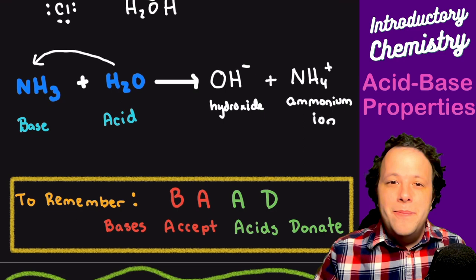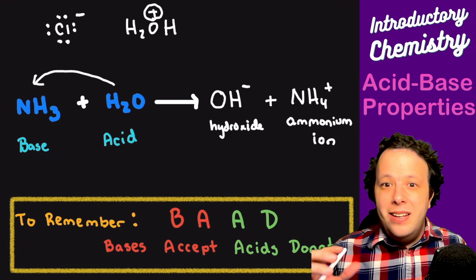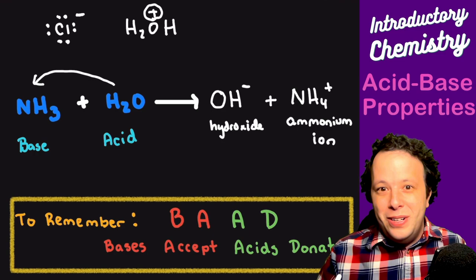The way to remember Bronsted-Lowry acids and bases is the mnemonic BAD — with an extra A: Bases Always Accept, Acids Always Donate. When it comes to protons, that's the easiest way to remember.